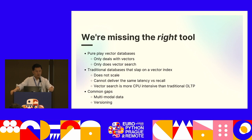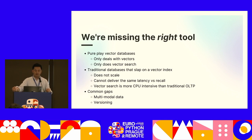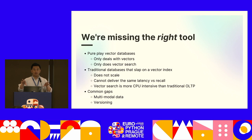In the former category, what's lacking is that they tend to only deal effectively with vectors and vector search. For traditional databases that just slap on a vector index, they tend not to scale well because the vector index isn't really architected in the same way as the underlying database — it can't really deliver the same latency versus recall characteristics, and vector search is much more CPU-intensive than traditional OLTP workloads.